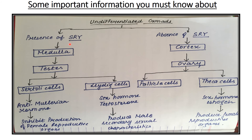The undifferentiated gonads, where the SRY gene and TDF factor are present, lead the medullary region to develop into testes, while the SRY gene is absent in the other pathway and the cortex region develops into ovary. Where SRY is present, many genes are expressed in somatic cells and differentiate them into Sertoli cells. Sertoli cells produce anti-Mullerian hormone, which suppresses female reproductive organ production, so male reproductive organs develop instead.